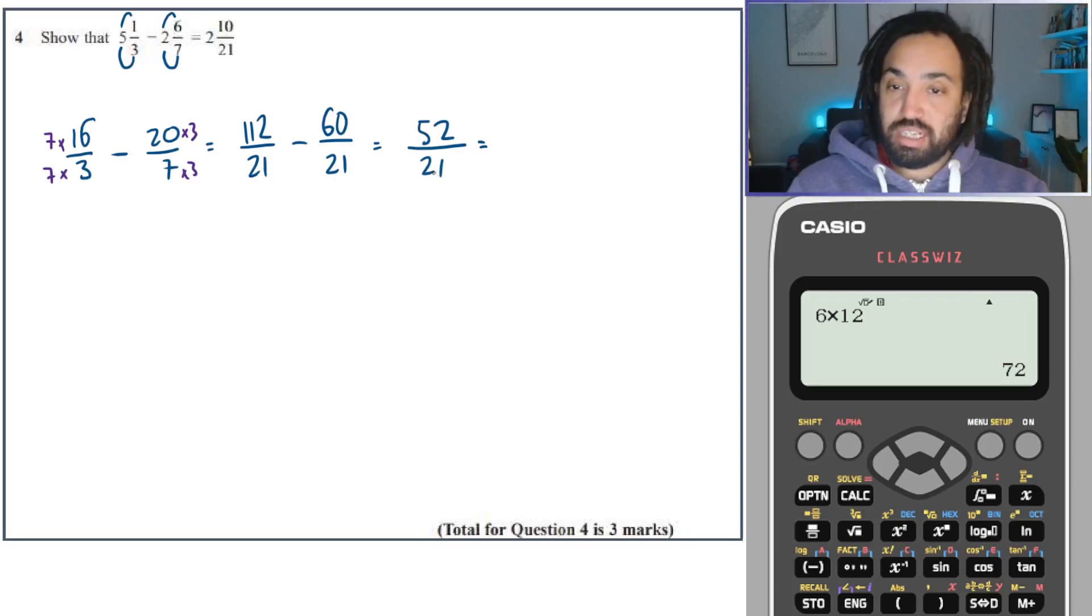So 112 minus 60 is 52. And I can see clearly that we're going to get two lots of 21 will fit into 52. And the remainder will be 10 because two lots of 21 is 42. So then it needs 10 more to make it up to 52. And that is the correct answer. All working shown. Full marks, Bosh.